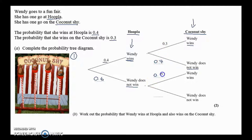So we're just going to have 0.3 for a win and 0.7 for a loss on the coconut shy. That will get us the two marks here, filling that out.